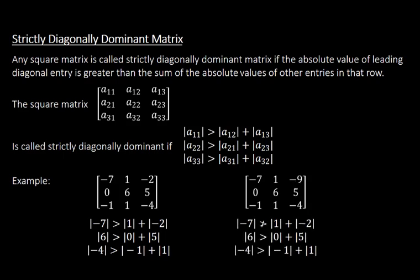This next matrix satisfies the condition for the second and third rows, but it does not satisfy the condition for the first row. Hence this matrix is called not strictly diagonally dominant matrix.